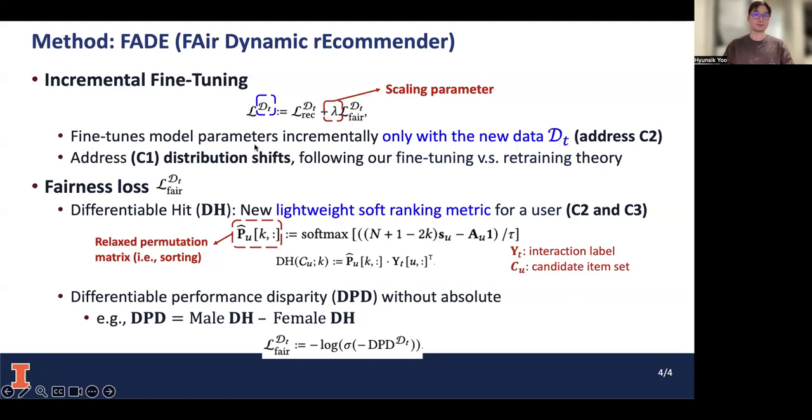It also addresses distribution shift following our fine-tuning versus retraining theory. The fairness loss is based on differentiable hit (DH), a lightweight soft-ranking metric for each user that serves as a surrogate of the performance for each user.